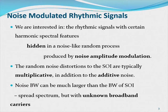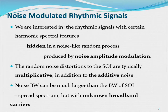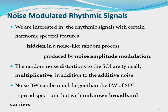First, noise modulated rhythmic signals. We are interested in rhythmic signals with certain harmonic spectrum structures. This kind of signal is typically hidden in noise-like random processes, and they're produced by noise amplitude modulation. This kind of mechanism is a little bit different from a communication system — maybe you don't intend to transmit, but the end signal gets transmitted. The other things produce modulation. The random noise distortion to the signal of interest, which we call the harmonic components, are typically multiplicative.